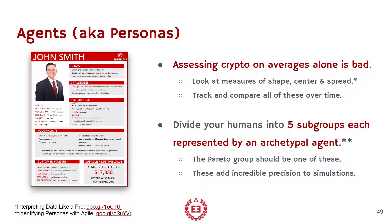That's what this sheet does. You put a picture, a description, a face on it. You explain likes and dislikes — everything you'd want to know about this individual and how they interact with you, including around value. How many tokens do they hold? Are they high token holders? Because the Pareto group — the 20% that are probably holding 80% of the value in the tokens — should definitely be one of the personas or agents you develop. These add incredible precision to simulation.